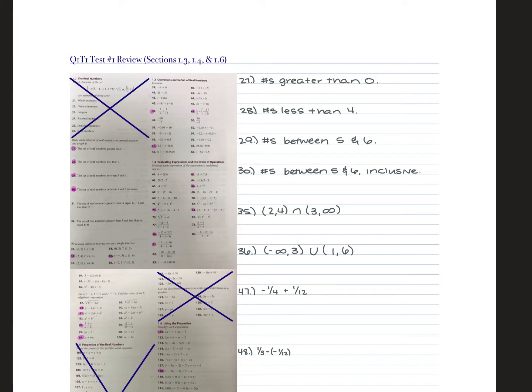We are only doing specific questions from this review that are most similar to the ones you'll see on your test. The first four we start with, we're just writing the interval notation for the word form or statement given to us. Remember: if a number is not equal to that value, it gets a parenthesis. If it is equal, it gets a bracket. If you're working with infinity or negative infinity, it's automatically a parenthesis.